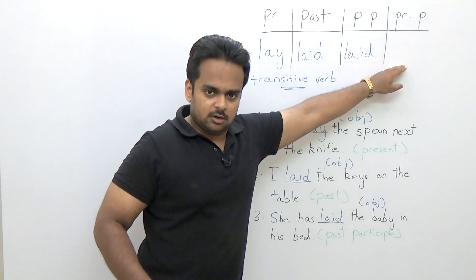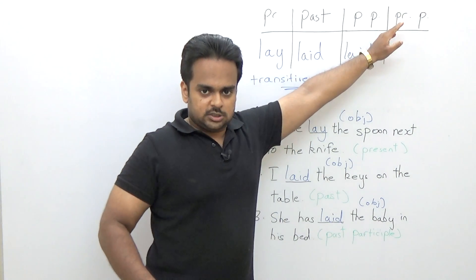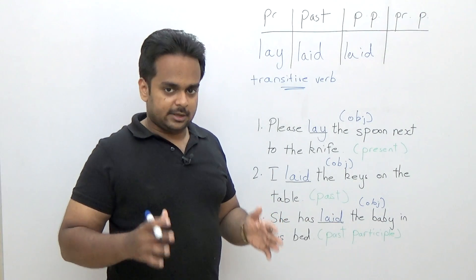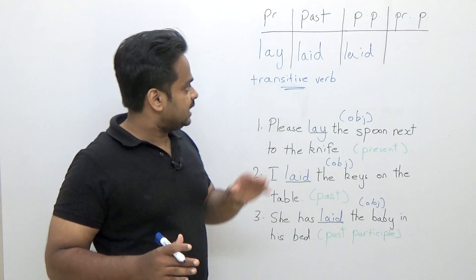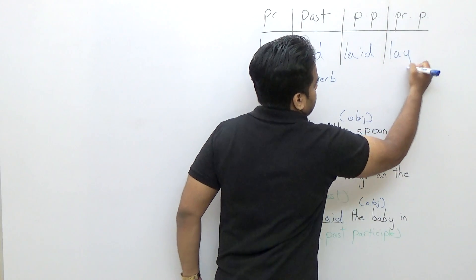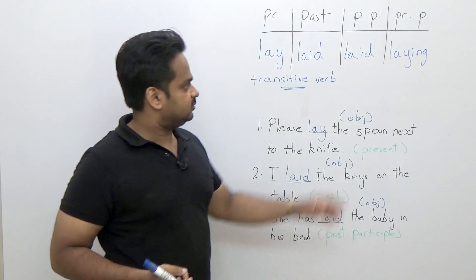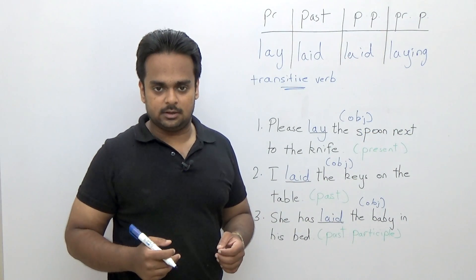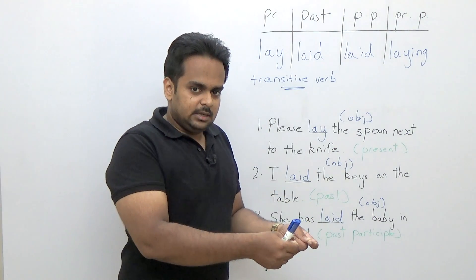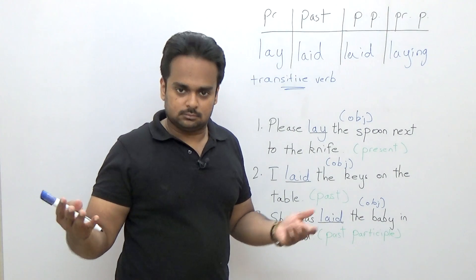Now the present participle form — which is just the -ing form — is 'laying', simply with -ing added to the end. For example: 'She was laying the baby in bed while the phone rang.'